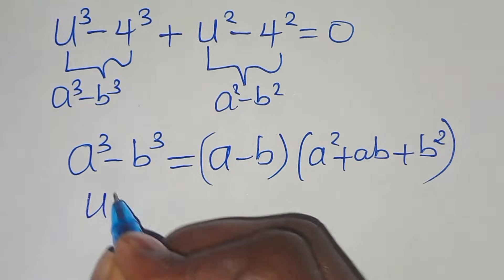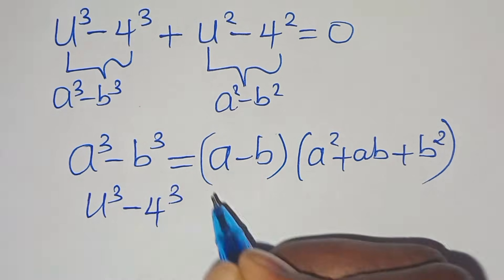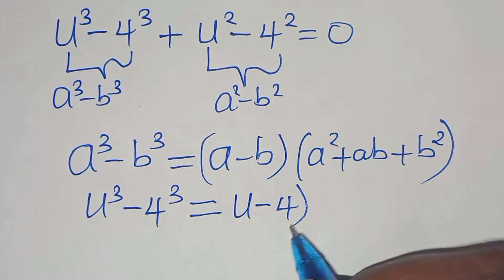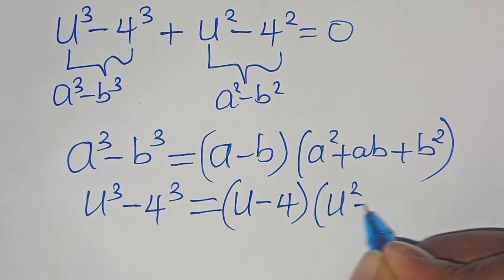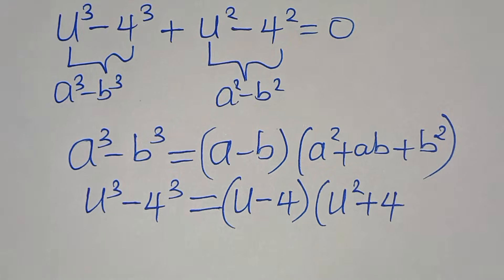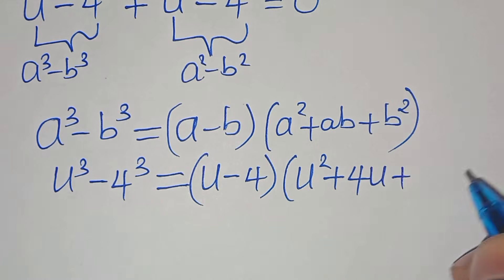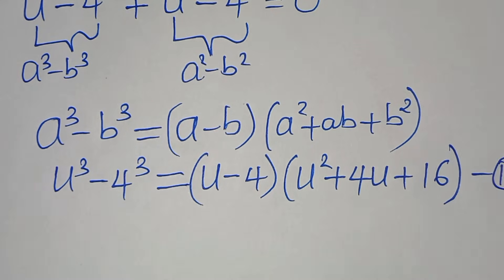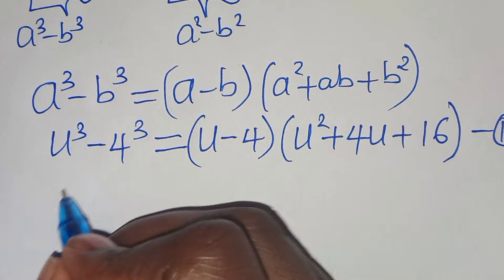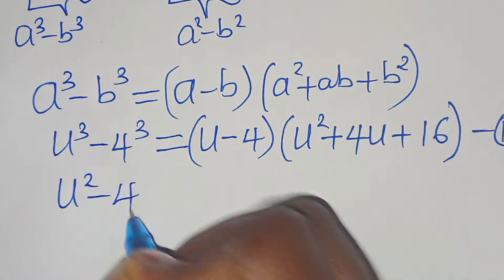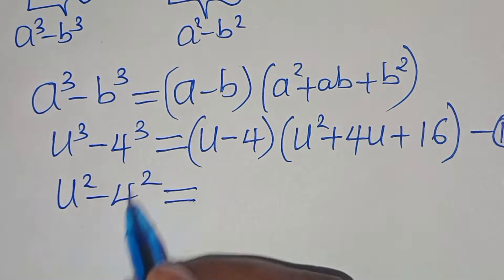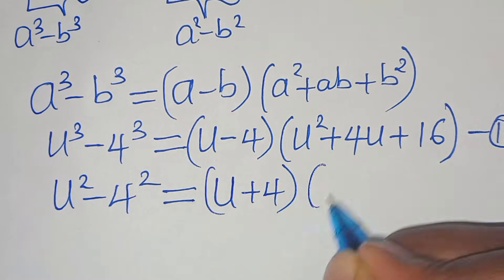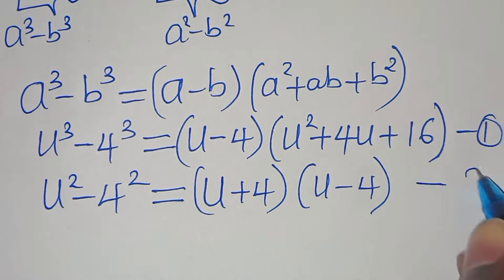Applying this: u³ minus 4³ factors as u minus 4, times u² plus 4u plus 16. Call this equation 1. Then u² minus 4² is the difference of two perfect squares, which factors as u plus 4 times u minus 4. Call this equation 2.